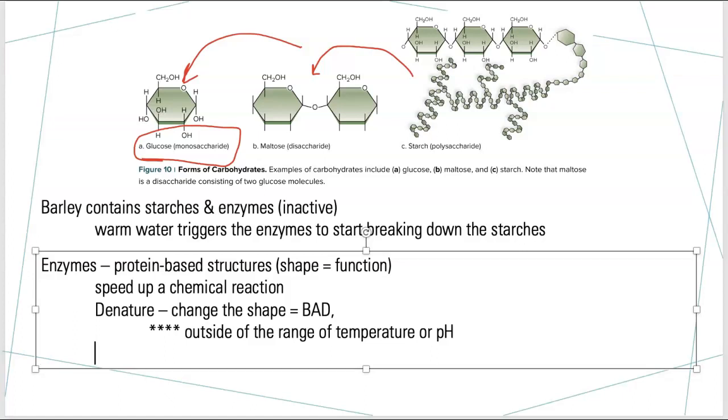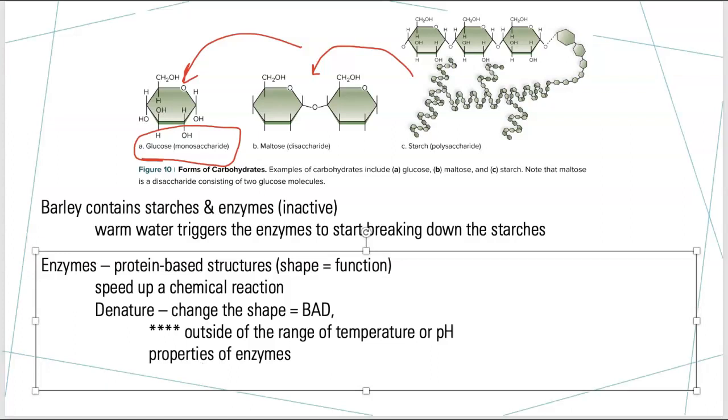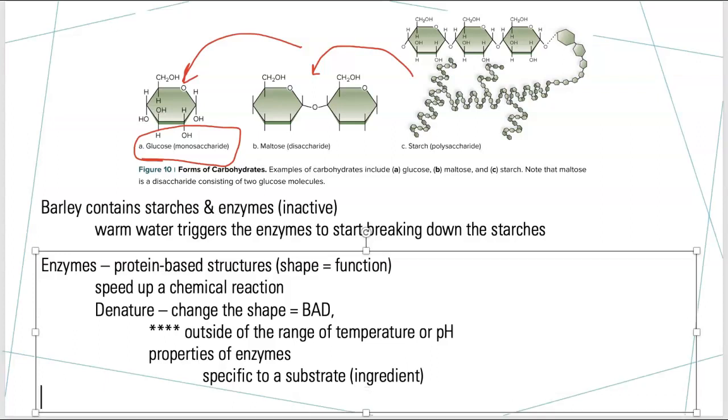Now some properties of enzymes that we want to be familiar with are things like they're very specific. So they're specific to a substrate or the ingredient in the pathway. So there's a specific enzyme in barley that works on starch. It won't work on anything else. It works just with starch. It's like a key and a lock. They fit together. So that's one feature that we want to remember.